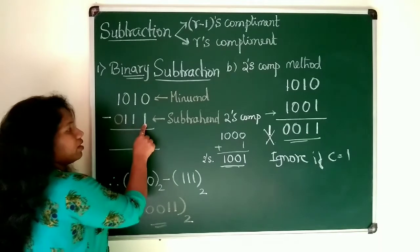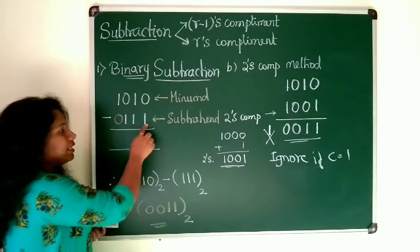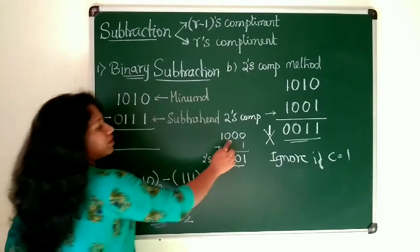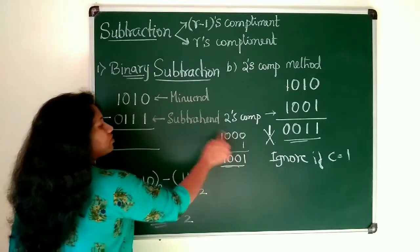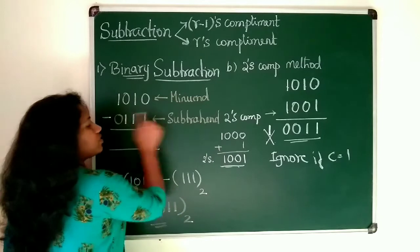0, 1, 1, 1. So invert all these digits. So that will be your 1, 0, 0, 0. 1 turns to 0, again 1 turns to 0, 1 turns to 0, 0 turns to 1.